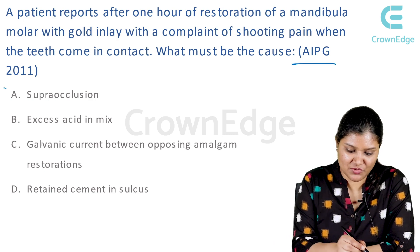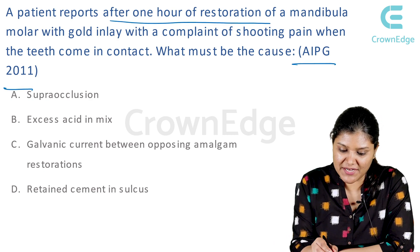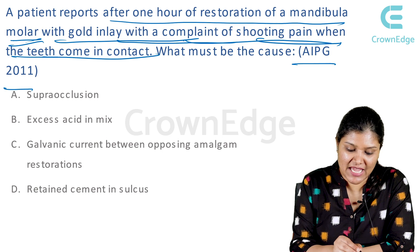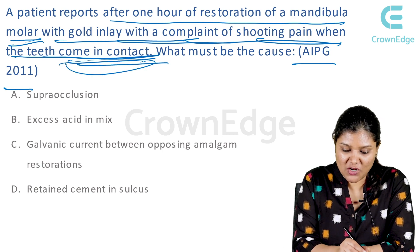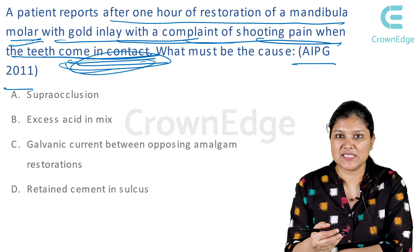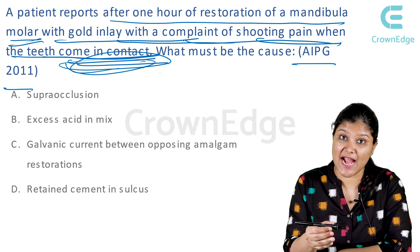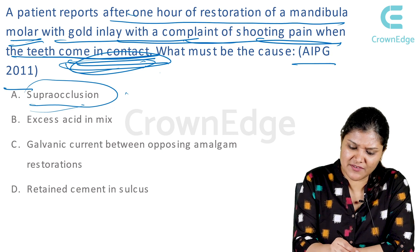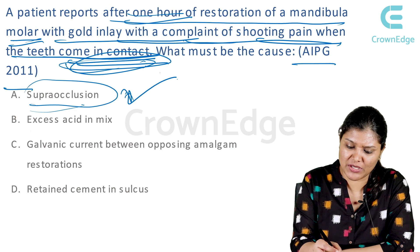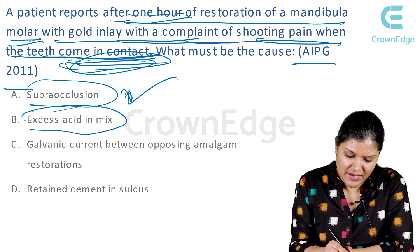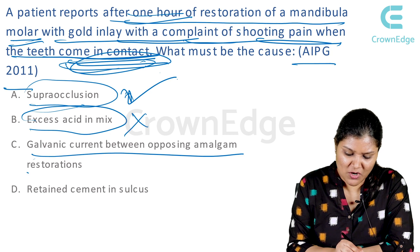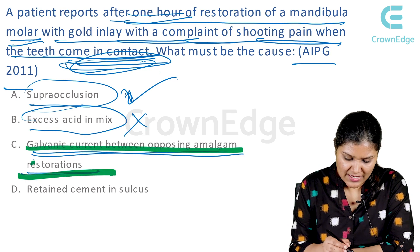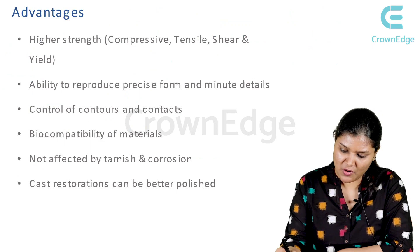This question came in AIPG 2011: a patient reports after 1 hour of restoration of a mandibular molar with gold inlay, with complaint of shooting pain when the teeth came in contact. 'When teeth come in contact' is very important. It could be supraocclusion, but within 1 hour the patient will not feel such shooting pain. The answer is galvanic current between opposing amalgam restorations. Retained cement in sulcus will not cause shooting pain.